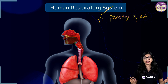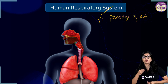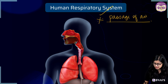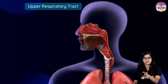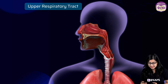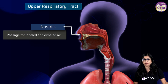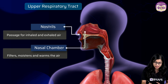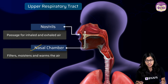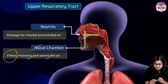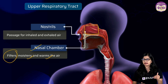When we breathe in, air enters through the small openings in our nose called nostrils. These nostrils are located as part of the upper respiratory tract. The respiratory system is divided into two regions: the upper respiratory tract and the lower respiratory tract. Air starts its journey through the nostrils, then enters a chamber called the nasal chamber or nasal cavity. This nasal cavity moistens and warms the air and filters out dust particles or unwanted particles entering with the air.